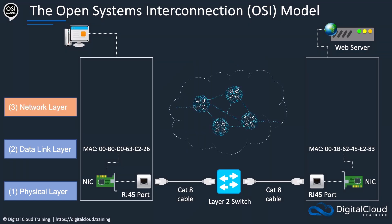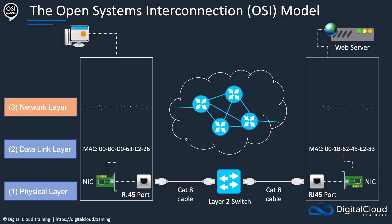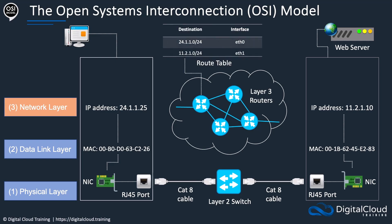Layer three is the network layer. Here we have all of the routing infrastructure on the internet and we have IP addresses. An IP address is a layer three address, and routers are layer three devices. They have a table very similar to the layer two switch, but they use IP addresses, routing connections across the internet based on IP addresses, knowing which interfaces different networks are associated with. There are complex routing protocols that run at this layer to make sure the connection finds the best path to the destination.